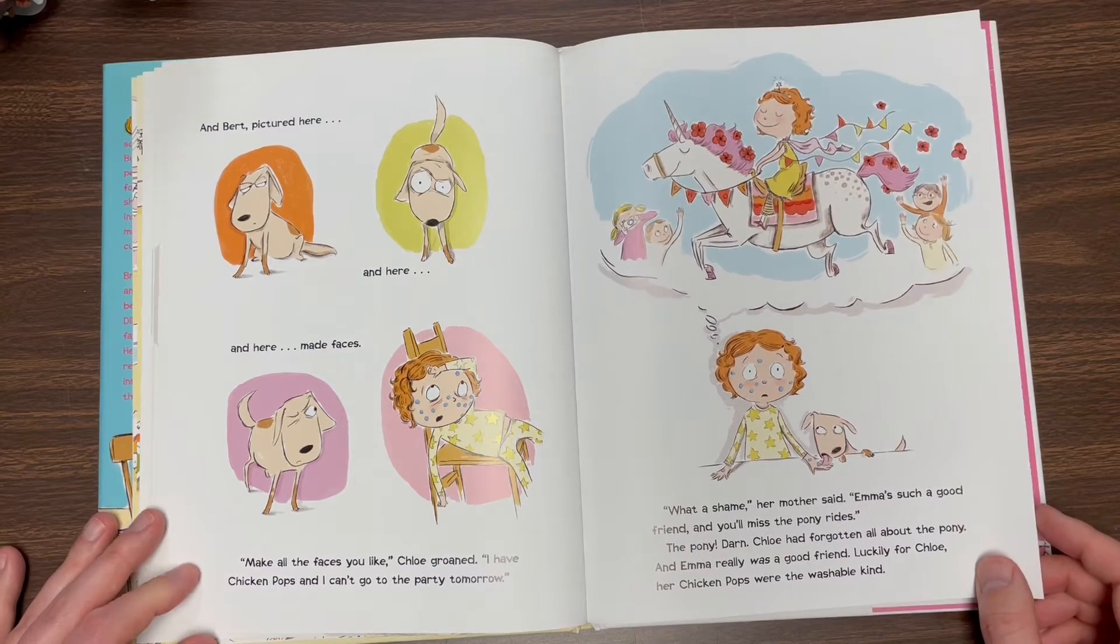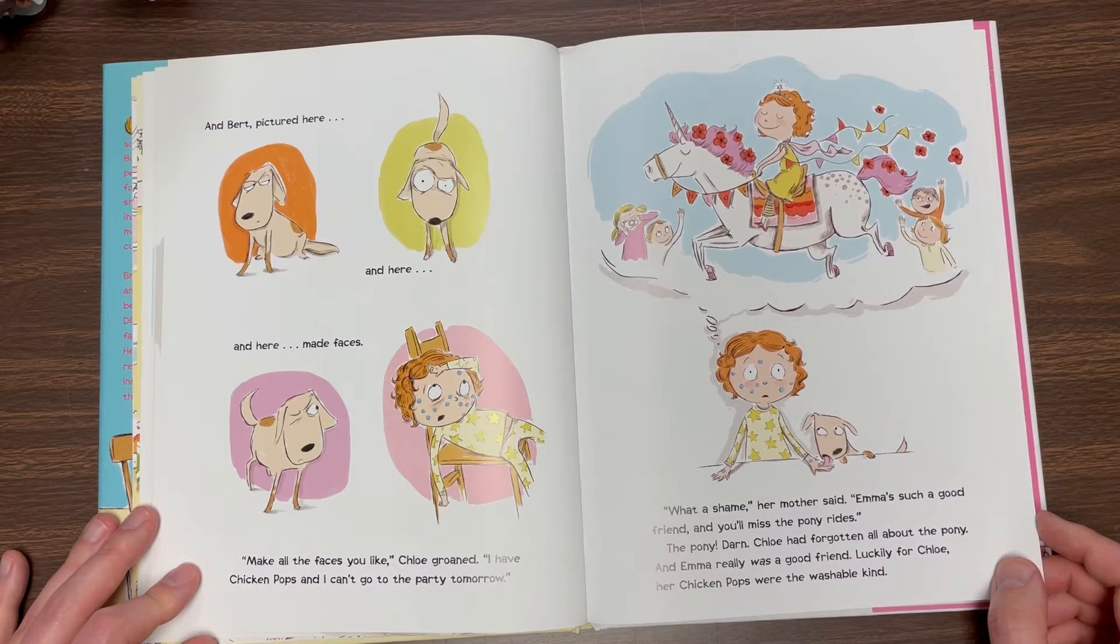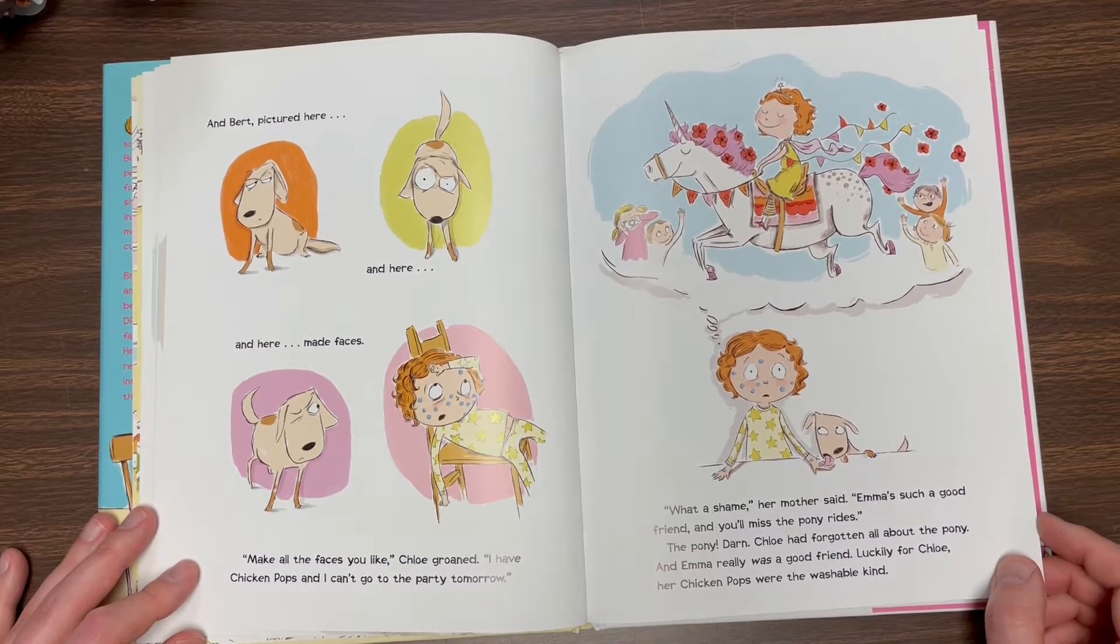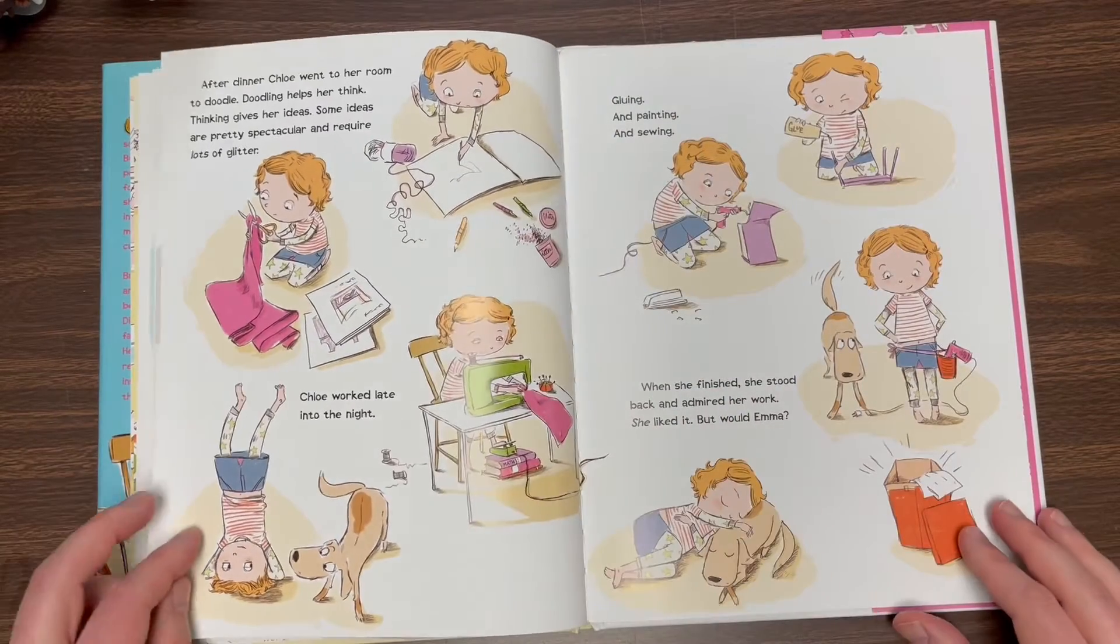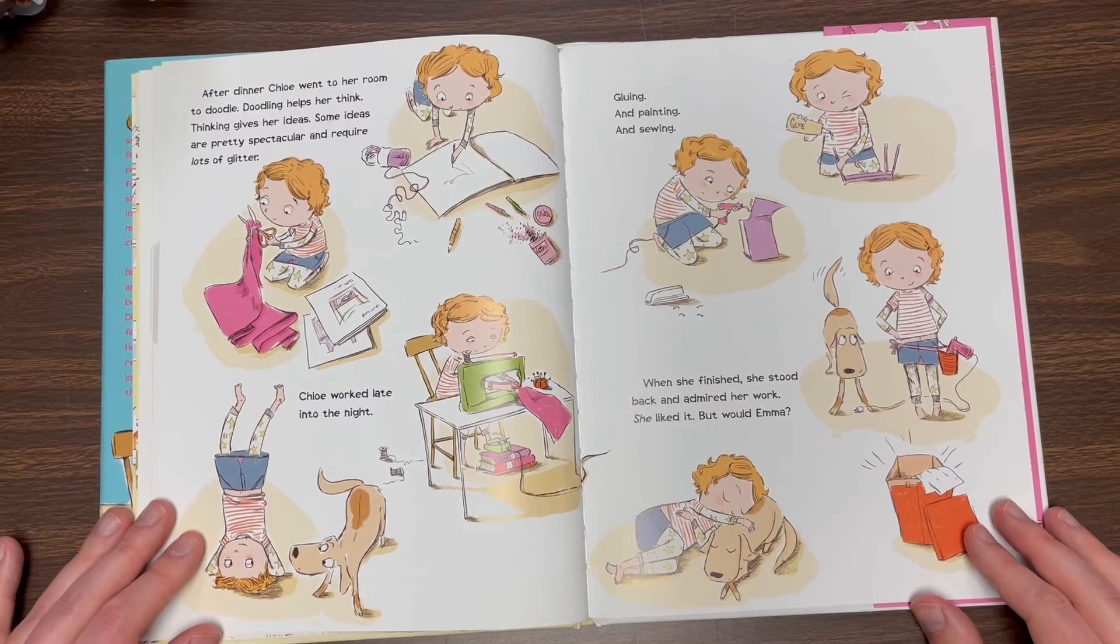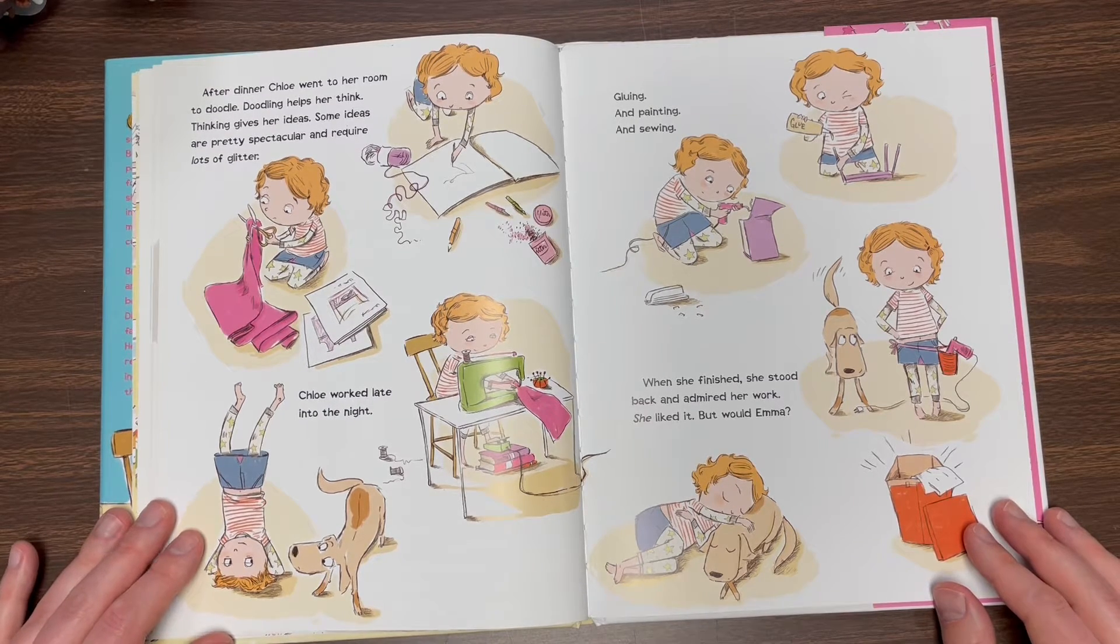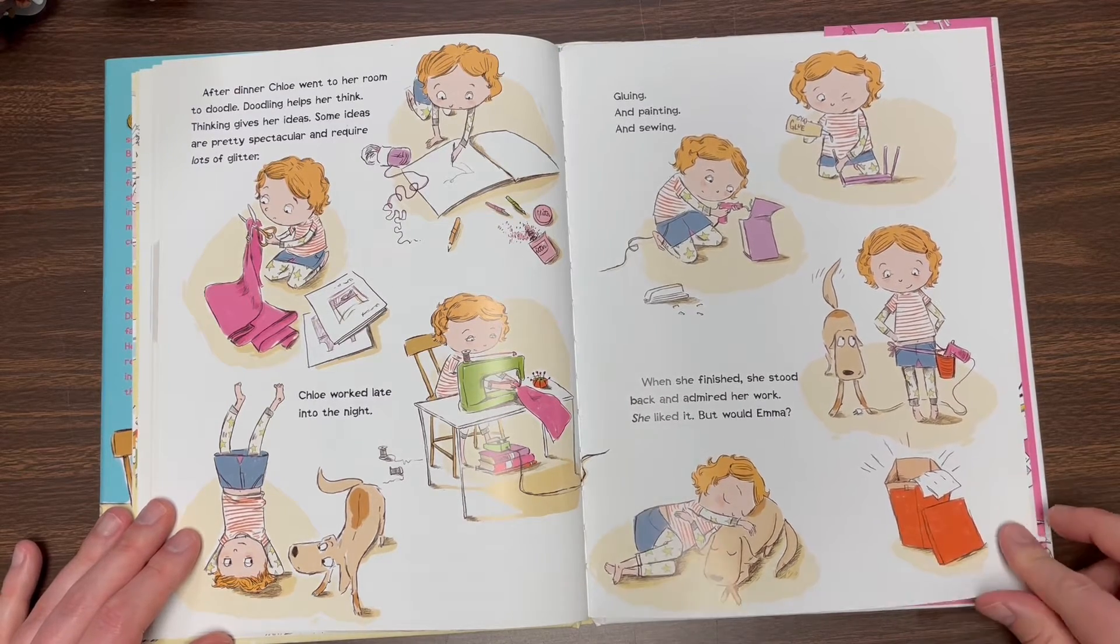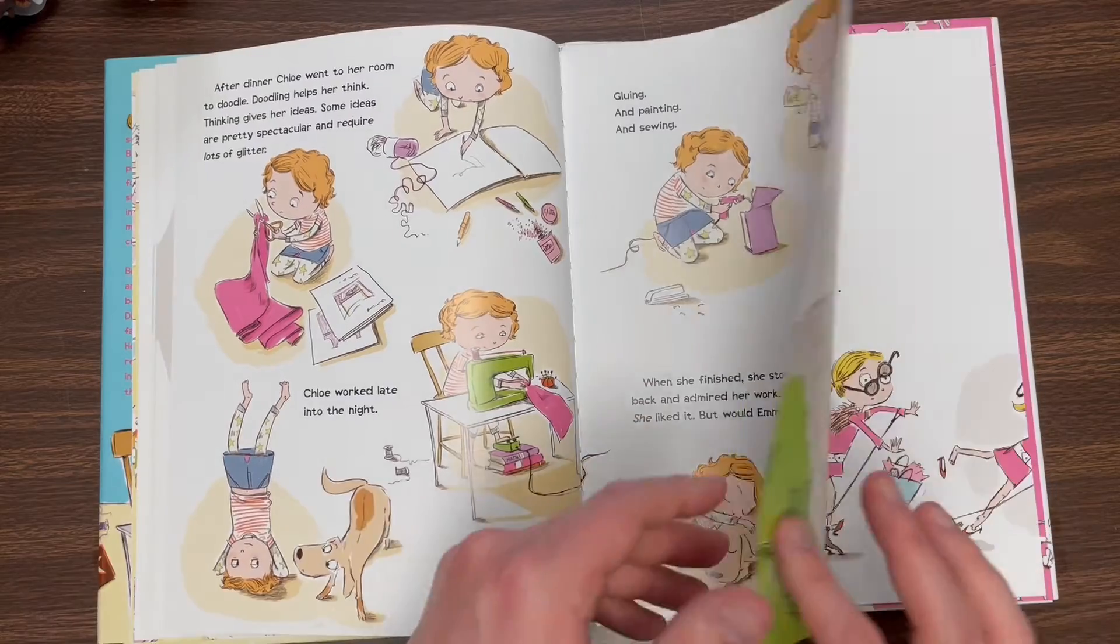What a shame, her mother said. Emma's such a good friend. And you'll miss the pony rides. The pony? Darn. Chloe had forgotten all about the pony. And Emma really was a good friend. Luckily for Chloe, her chicken pops were the washable kind. After dinner, Chloe went to her room to doodle. Doodling helps her think. Thinking gives her ideas. Some ideas are pretty spectacular and require lots of glitter. Chloe worked late into the night, gluing and painting and sewing. When she finished, she stood back and admired her work. She liked it, but would Emma?